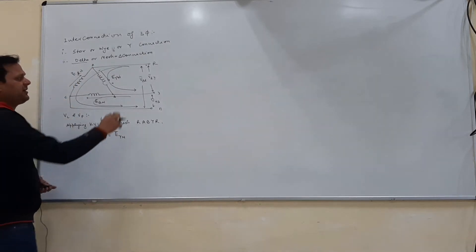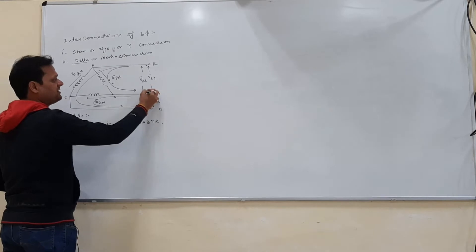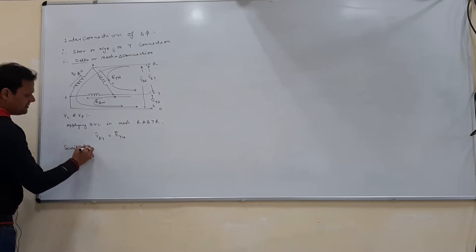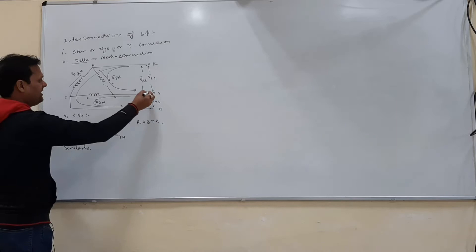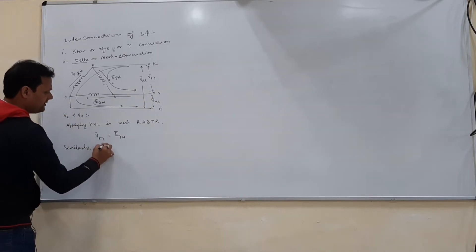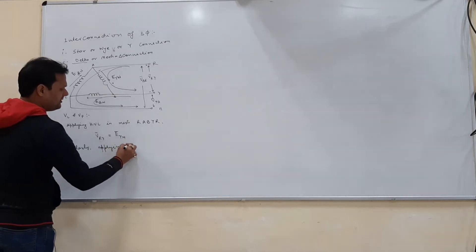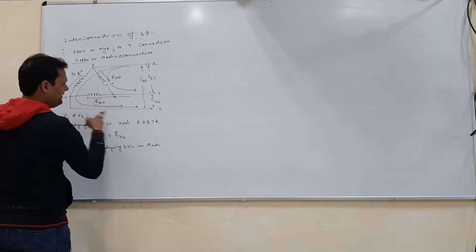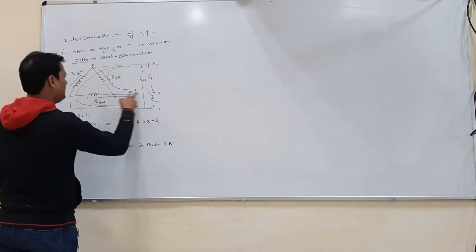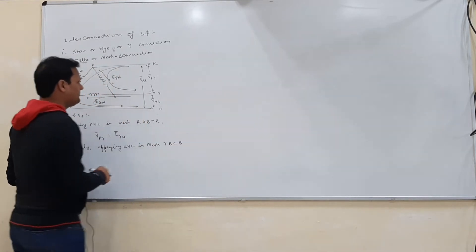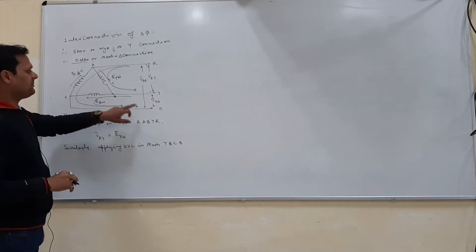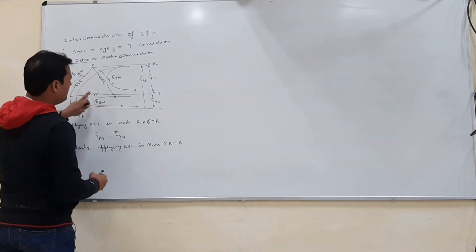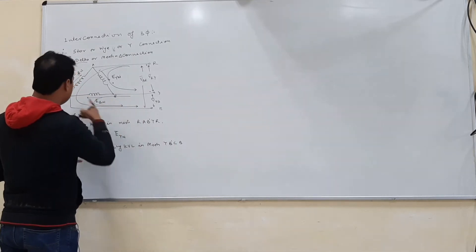Considering VRY as the voltage of line R with respect to line Y, this is plus and this is minus. Similarly, applying KVL in mesh YBC — note: two points have the same label, so let us call one B dash — giving us mesh YB'CBY.